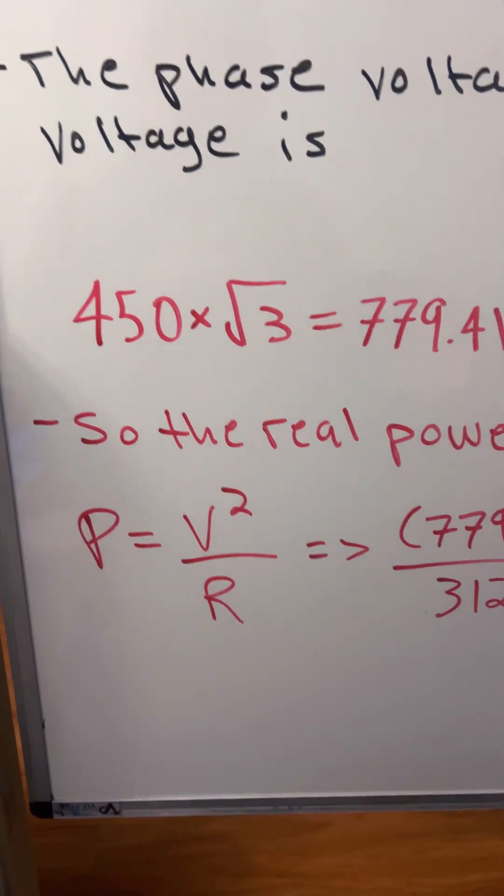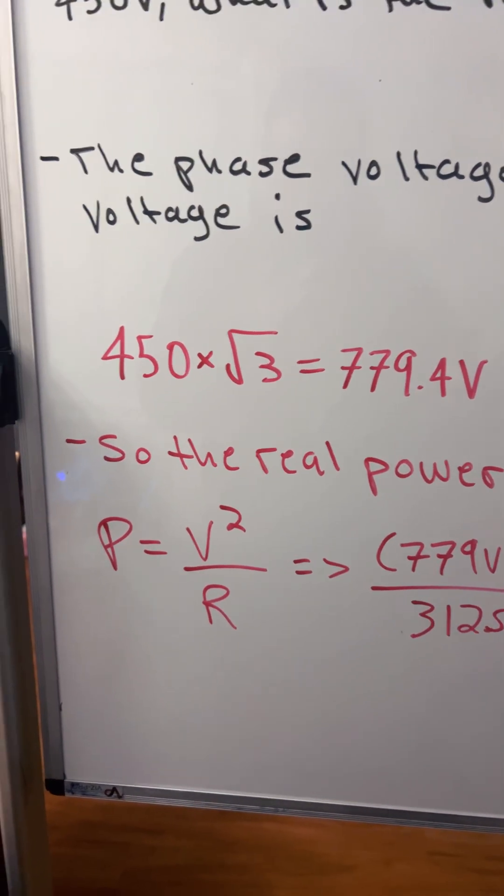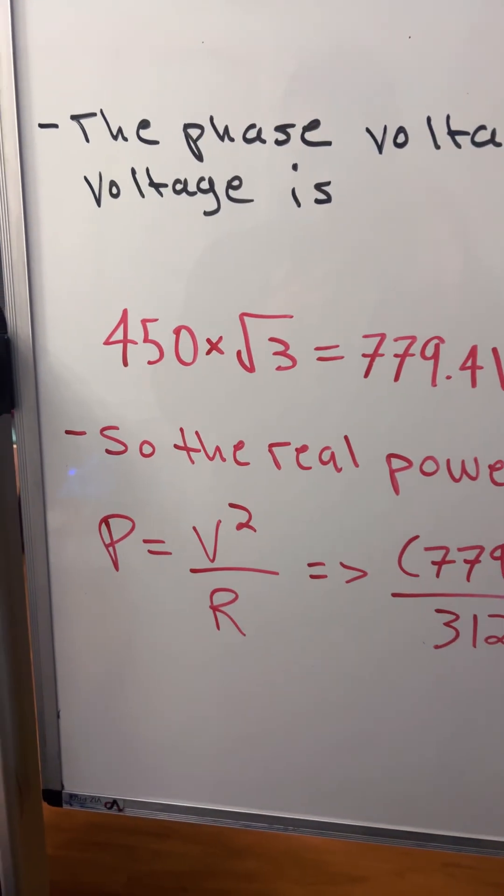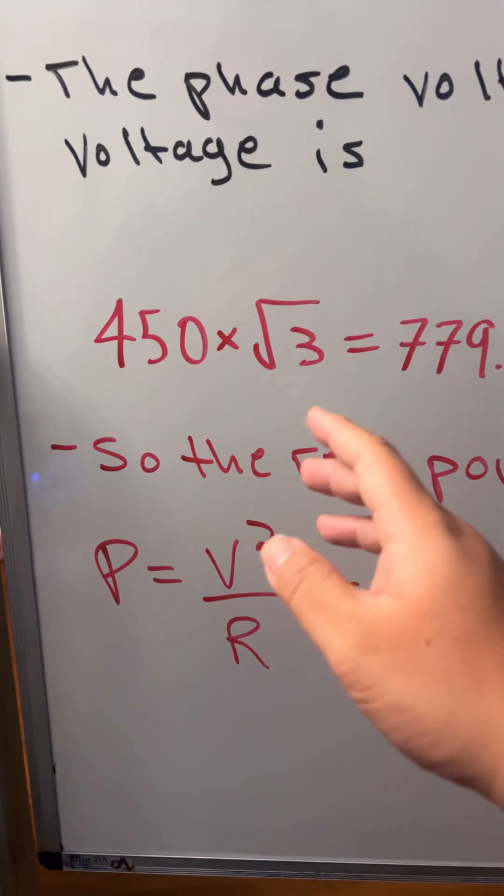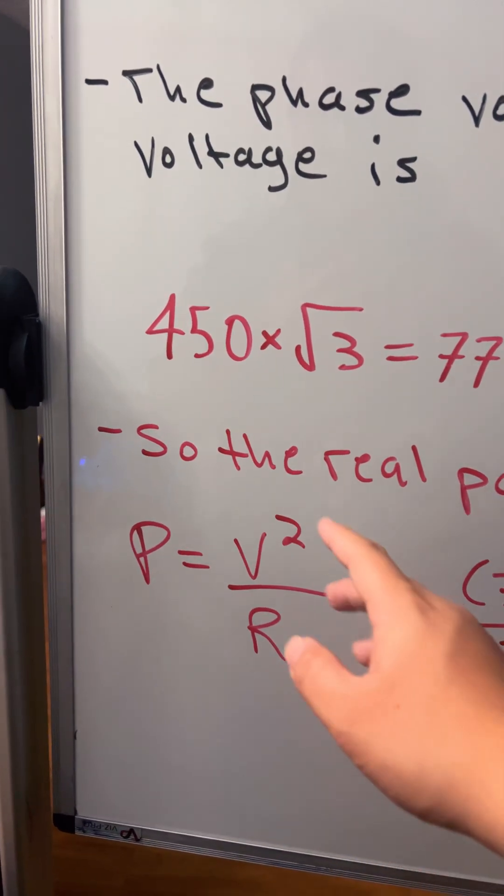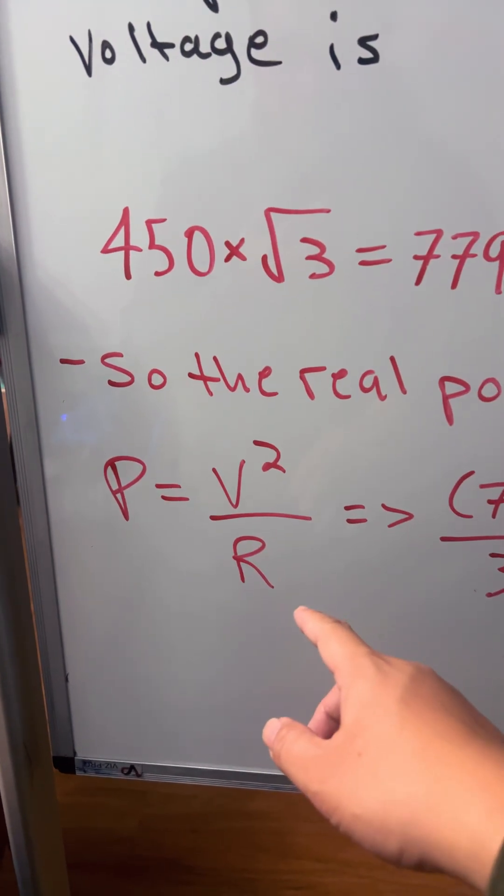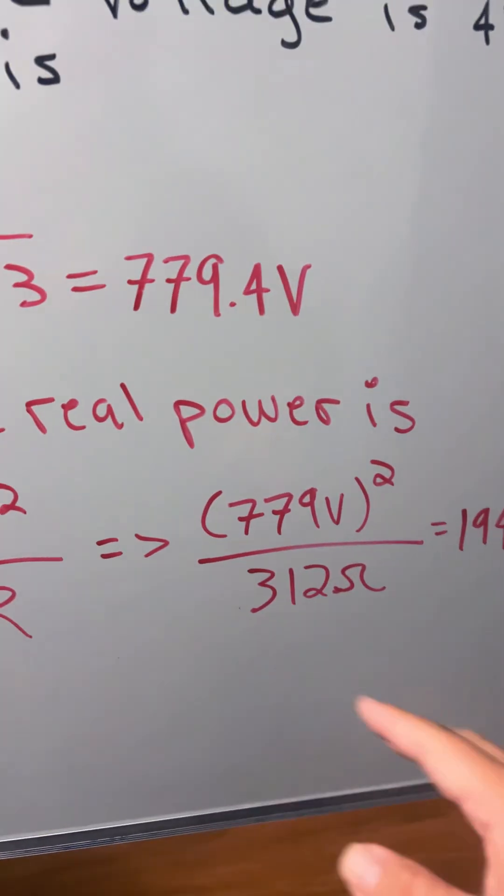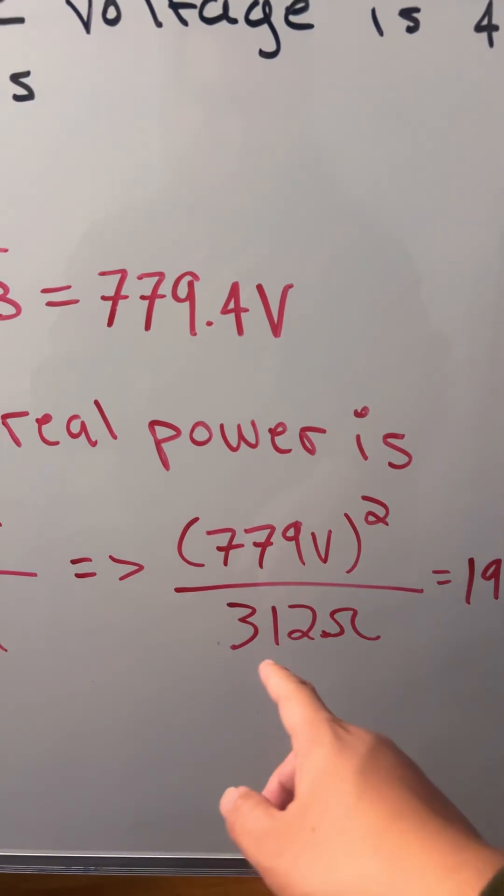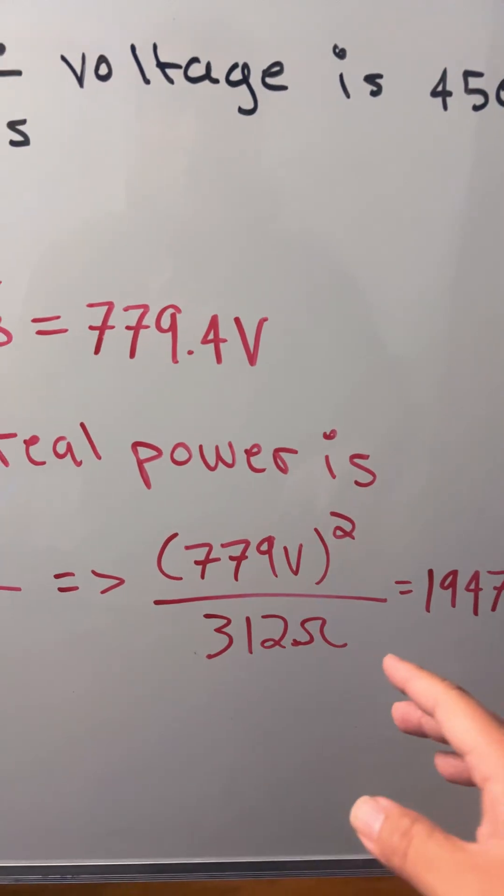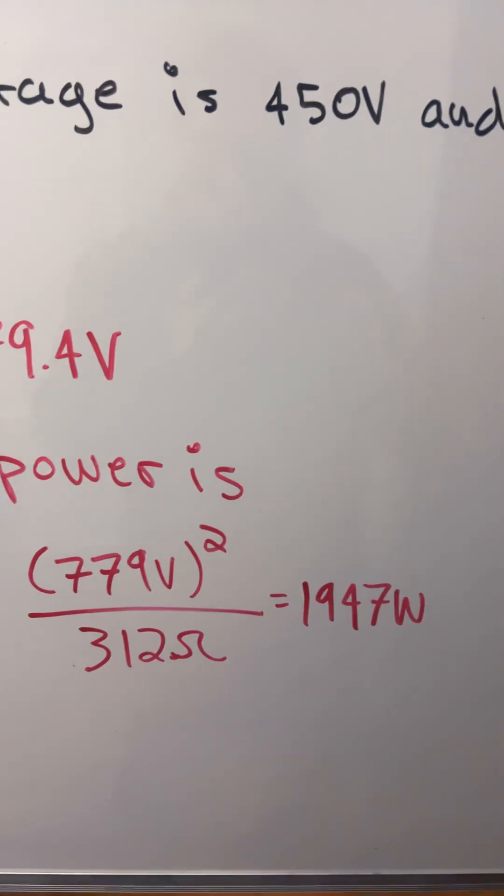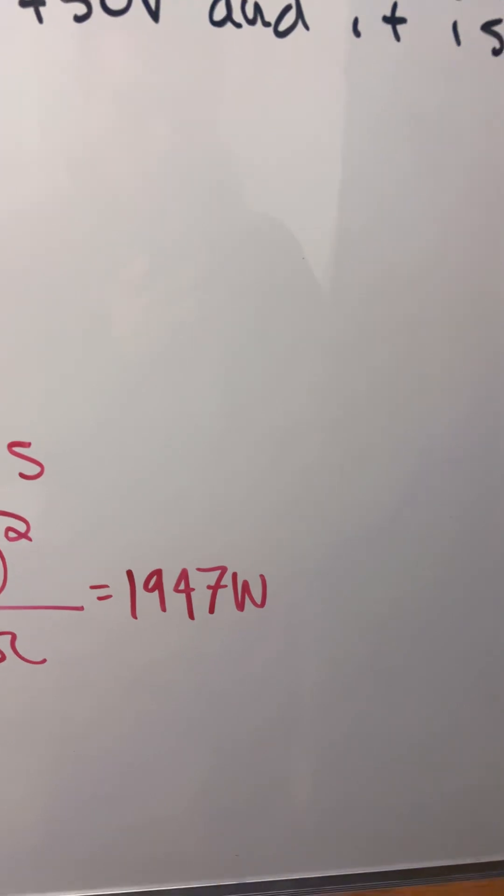So the real power dissipated is, we have the power formula. The power dissipated formula is V squared divided by R. So V is the voltage, R is the resistance, and we plug in the numbers. So we have 779 volts squared divided by 312, which was given in the problem, and that will give us 247 watts.